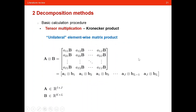We also have the Kronecker product. In my view, it is a lateral element-wise matrix product, because when we perform the Kronecker product between two matrices, each element of matrix A is multiplied with the entire matrix B. So it is element-wise with respect to matrix A, and each element of A multiplies with B.